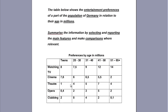Ok, here's a table. It seems that it has too much information but really, if you read it the right way, you will have no problem whatsoever. Let's read the task together. The table below shows the entertainment preferences of a part of the population of Germany in relation to their age in millions. Summarize the information by selecting and reporting the main features and make comparisons where relevant. So the first thing we do is read carefully the topic, what is described, and we underline the important points. This will familiarize us immediately with the task.